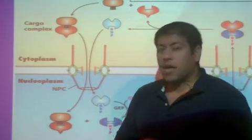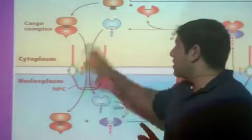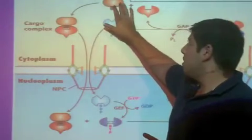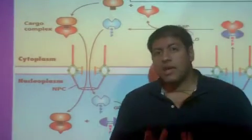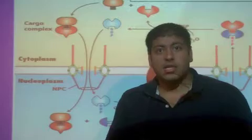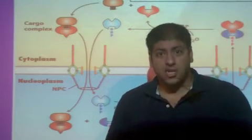All right, so again, what we're going to have first is our cargo protein, represented up here in brown with a little black square. This black square is representing the NLS, the nuclear localization signal.